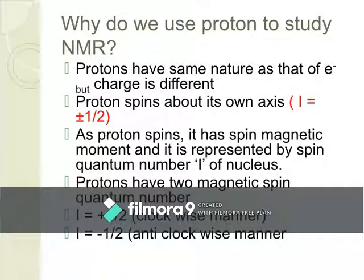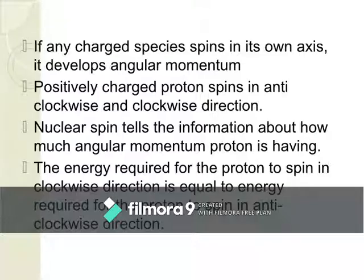Why do we use protons to study NMR spectroscopy? Protons have the same nature as that of electrons. Like electrons, a proton has its own spin — spin means rotation. It has both a clockwise and anticlockwise manner, because of which it has its own spin quantum number, that is I. If any charged body moves, it develops an angular momentum. The positively charged proton also spins in clockwise and anticlockwise direction, and so it develops spin angular momentum.